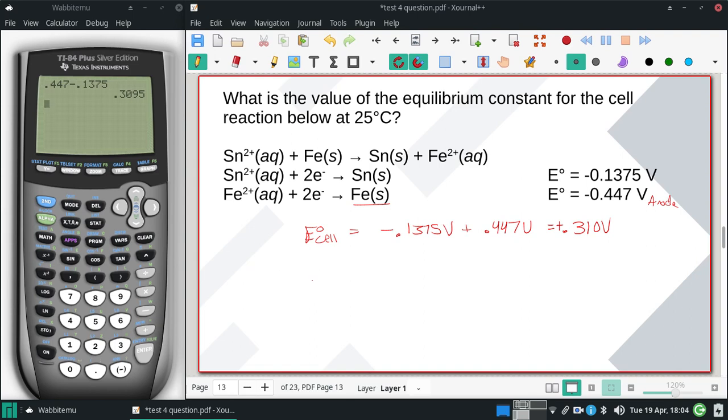Once we have that, to actually turn E° into a K, we're using the equation E° for the cell equals RT over nF times the natural log of K.